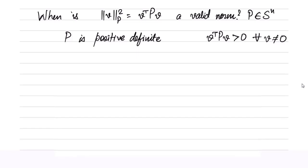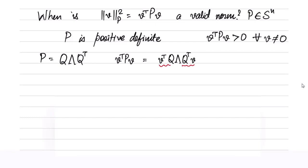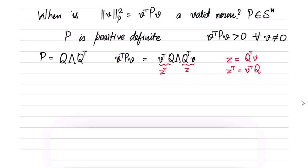Let us relate this to the eigenvalue decomposition. Suppose the eigenvalue decomposition of P is Q Λ Q^T. Then v^T P v equals v^T Q Λ Q^T v. Now let us regroup: we can observe that certain parts are similar, and we can denote z = Q^T v.